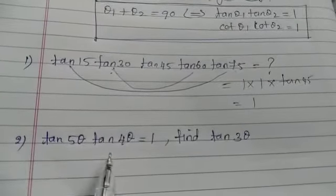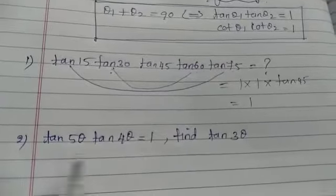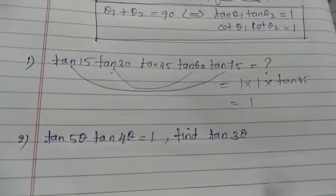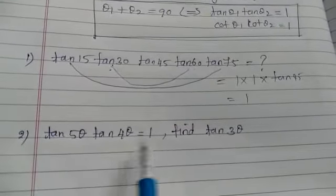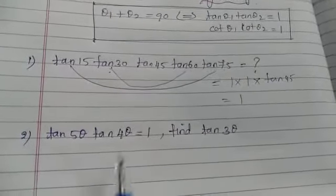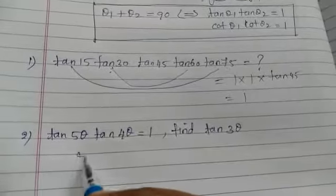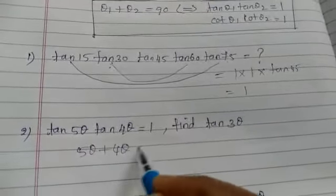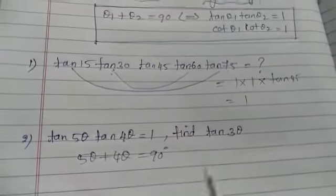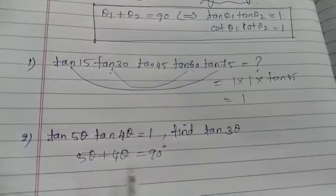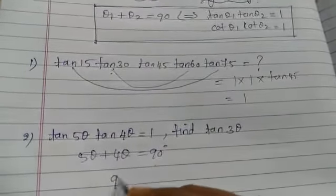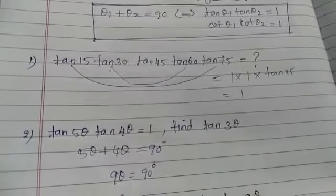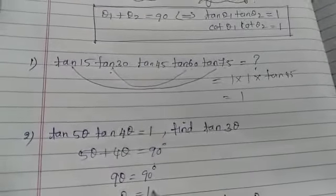tan 5 theta into tan 4 theta equal to 1. Find tan 3 theta. So we have this given, I will use the shortcut. tan 5 theta plus 4 theta equal to 90 degree. So 5 theta plus 4 theta equal to 90 degree, so 9 theta equal to 90 degree. So theta equals 90 divided by 9, which is 10.